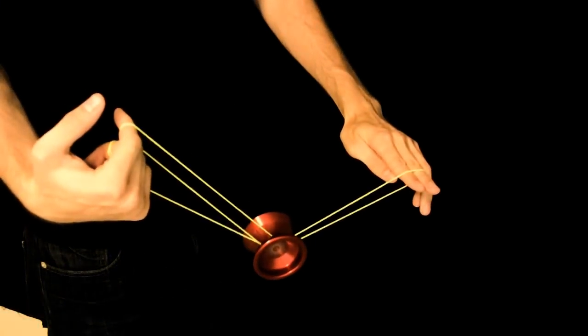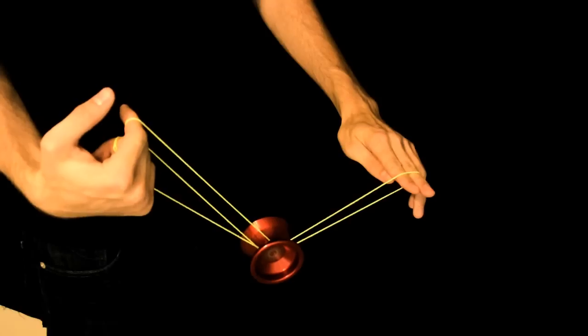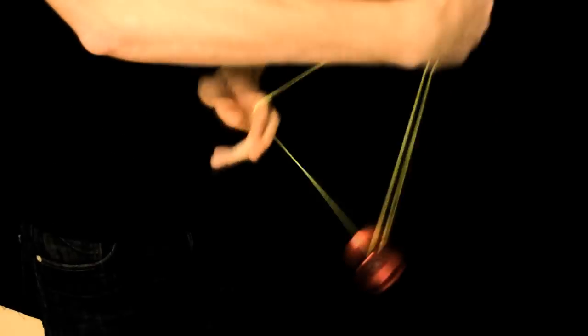Curl your throw hand finger up and towards you as you pop the yoyo in the string formation up and onto the back string. Pass the yoyo over your non-throw hand and perform a hug to exit the trick to trapeze.